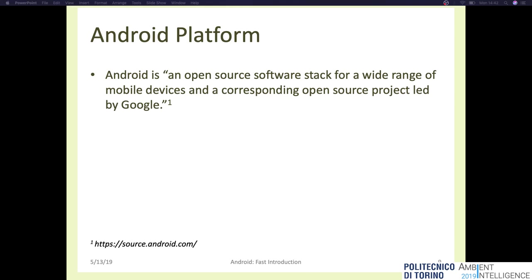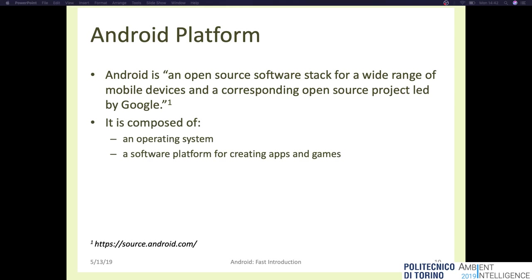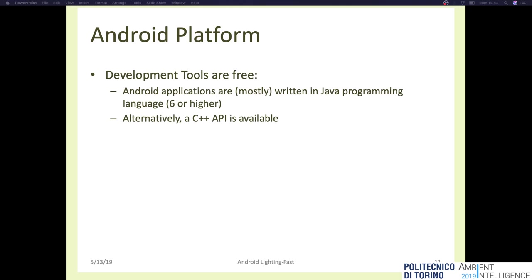Android is an open source software stack for a wide range of mobile devices, and it is also a corresponding open source project led by Google. Android is a platform, which means it is not just an operating system but an ecosystem of different actors, such as a set of development tools for creating mobile applications. Development tools are free and you can develop mobile applications mostly in Java. You can also write code in C++ if you need high performance, but the most common programming language for Android is Java.